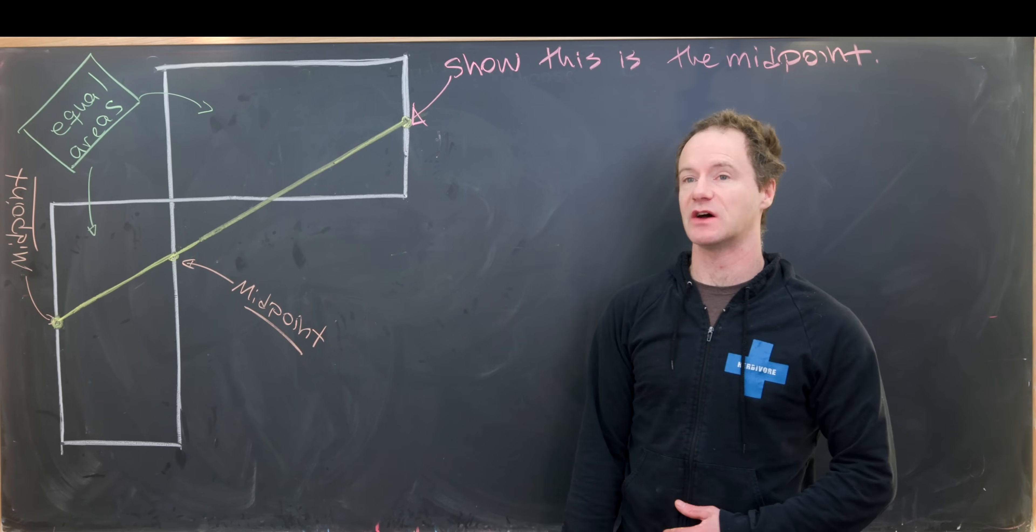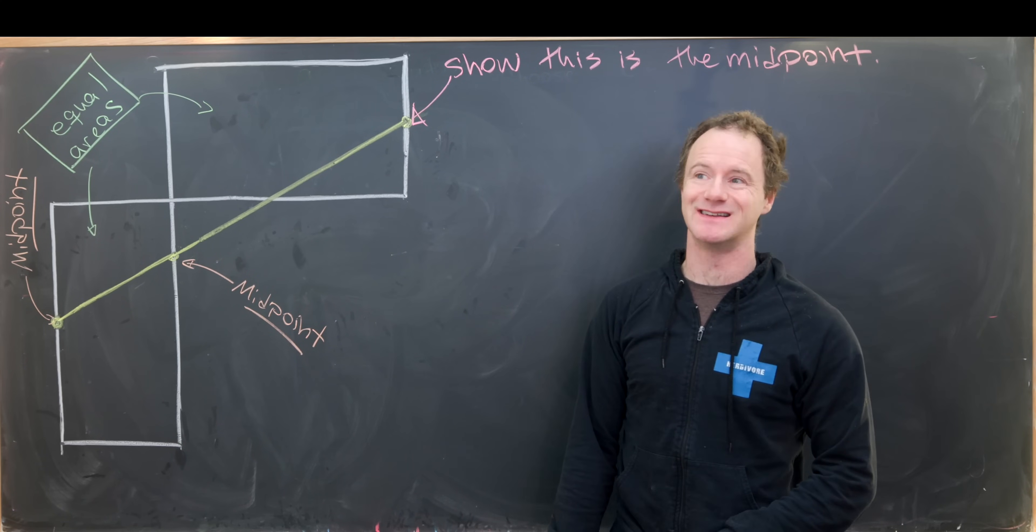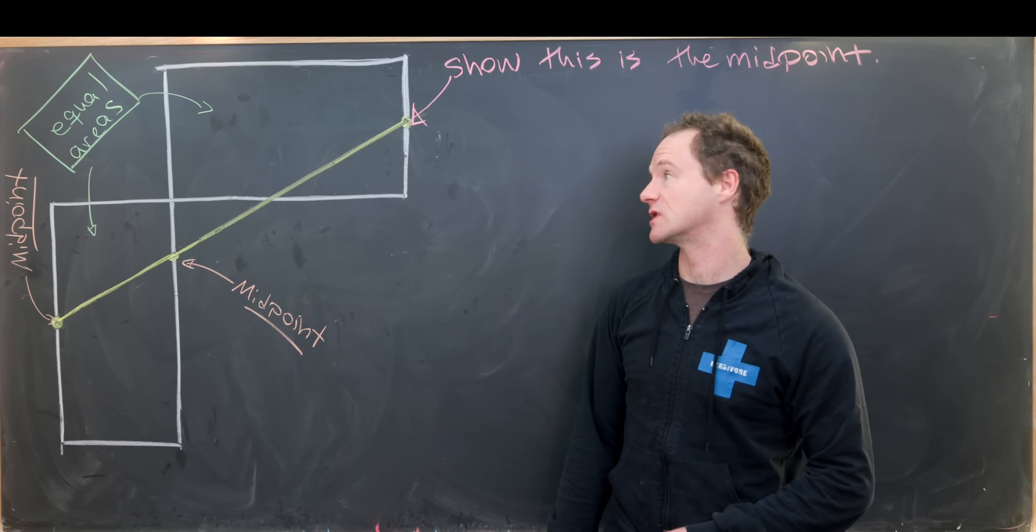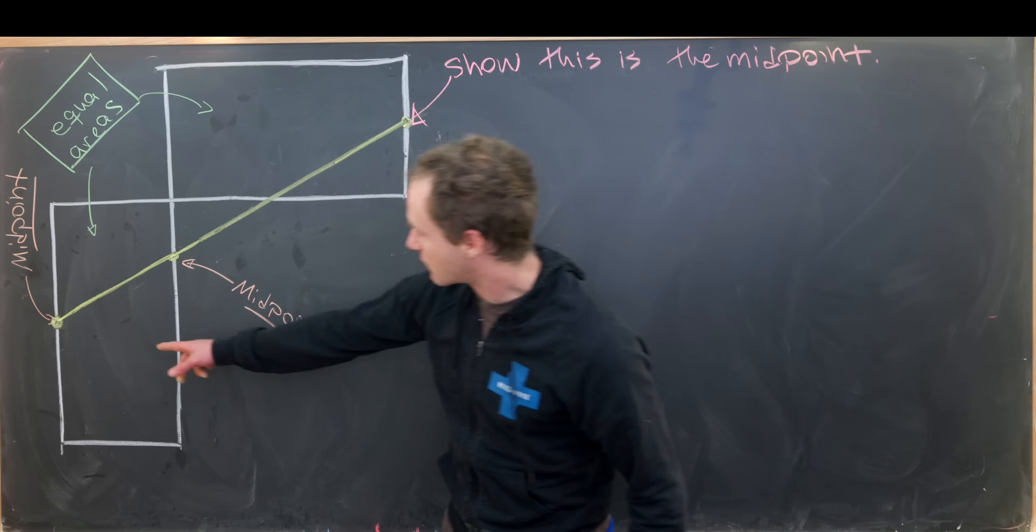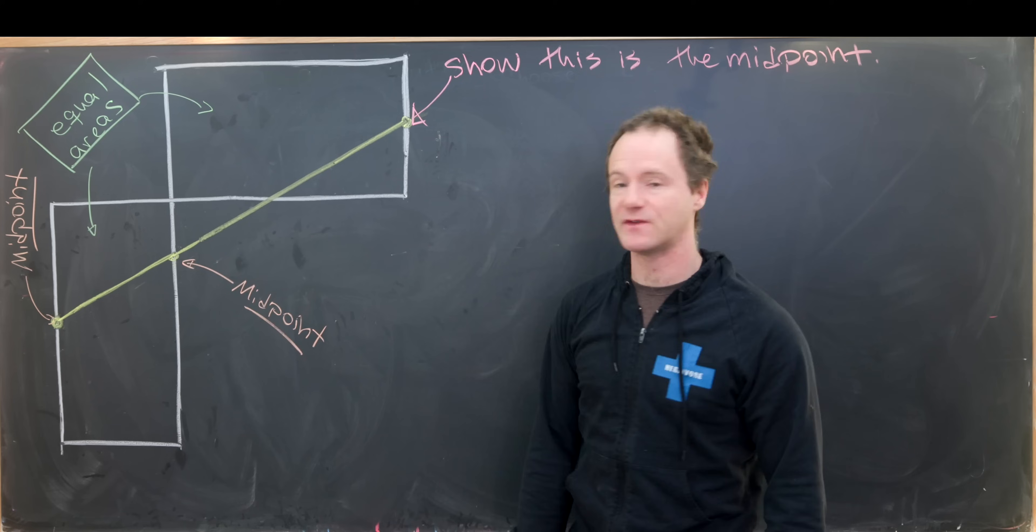Here I've got a fairly simple but nice geometry problem that comes from the 2019 Iranian Geometry Olympiad. So let's look at the setup. We've got rectangles situated as follows.